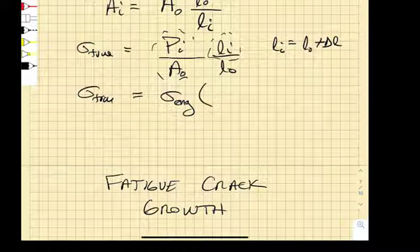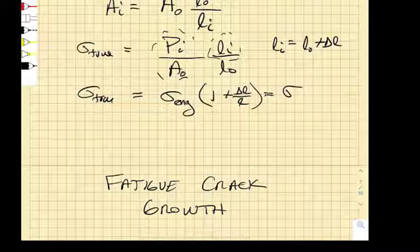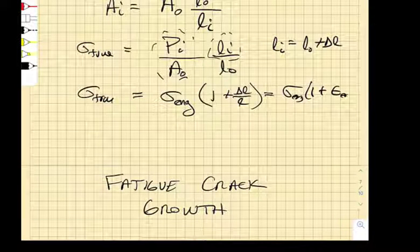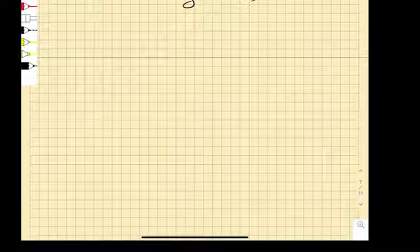if LI is L0 plus delta L, and we divide that by L0, we get 1 plus delta L over L. Well, that is equal to the engineering stress times 1 plus the engineering strain. So that's how we find the true stress.